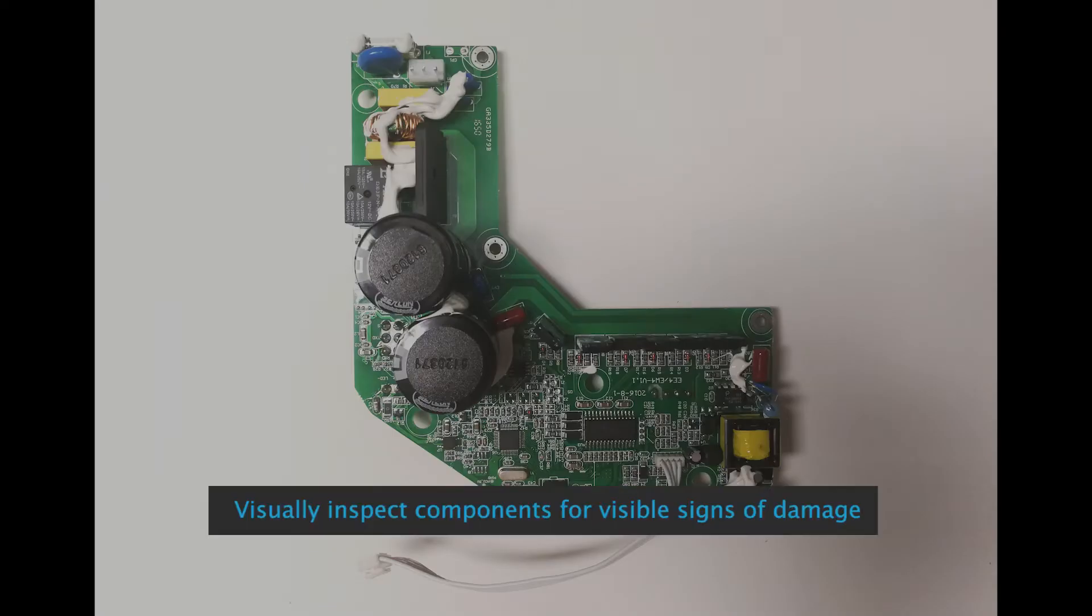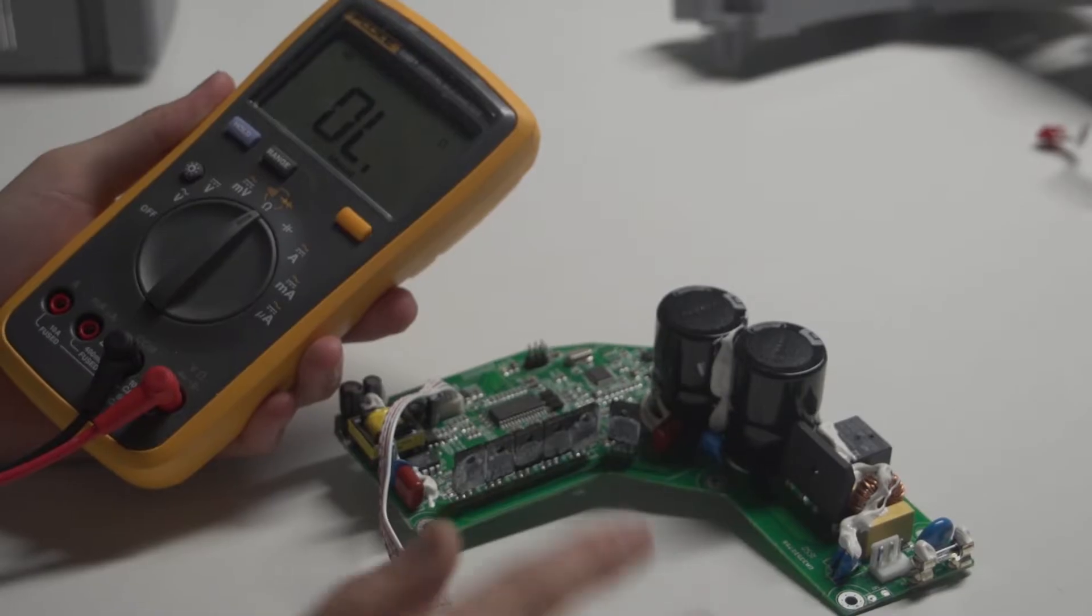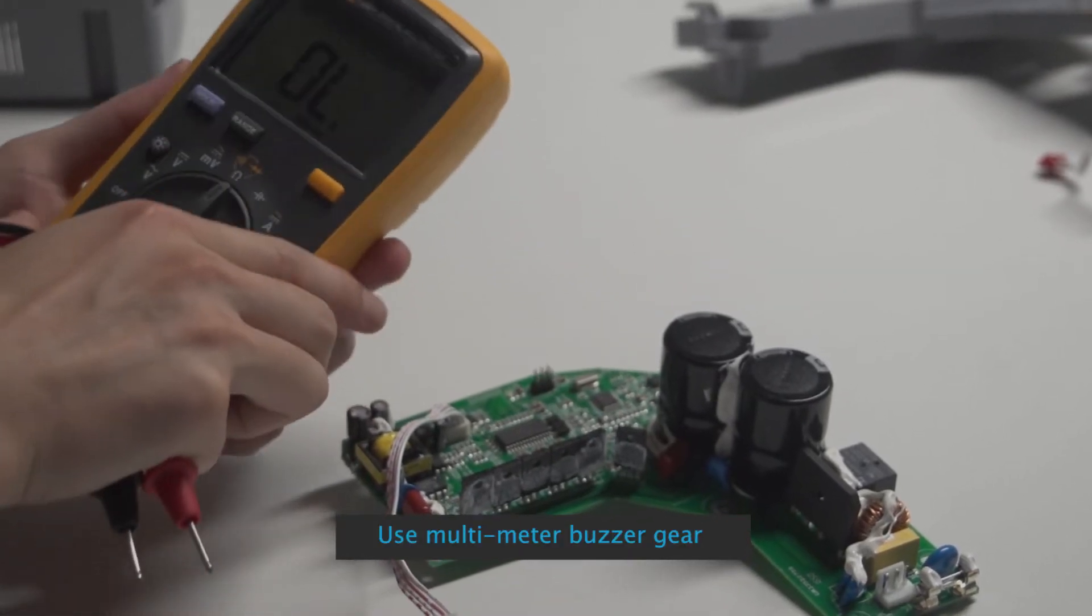Check E4 Control Box static measurement. Visually inspect components for visible signs of damage. Use multimeter buzzer gear.